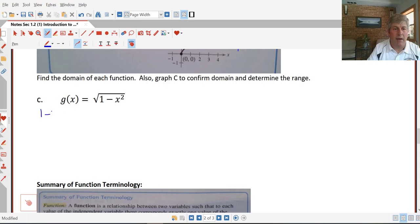And 1 minus x squared, since we can't take the square root of a negative number, must be greater than or equal to 0. So we factor that to 1 minus x times 1 plus x. It's got to be greater than or equal to 0.